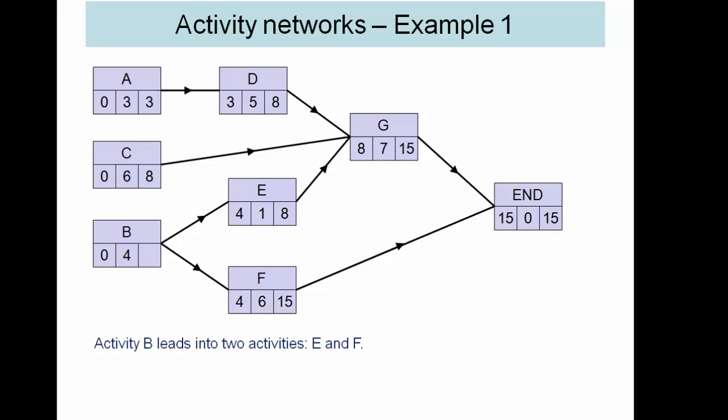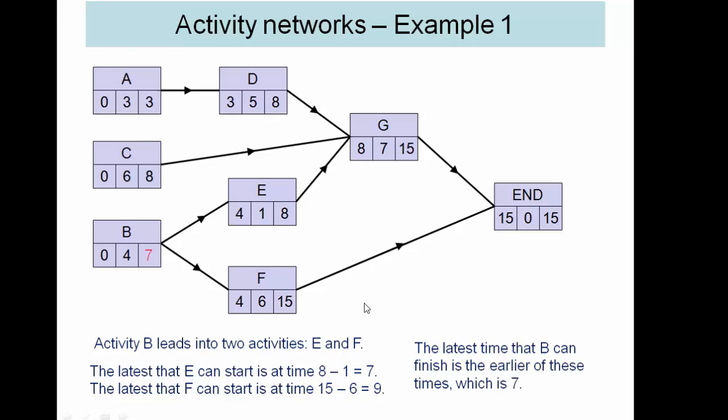Right, B is slightly different because it leads into both E and F. So eight minus one gives us seven for E, but then 15 minus six gives us nine for F. So we can see here on this occasion we have to take the earliest of the late times since we want to avoid delaying the project. And if we waited till nine we would delay the start of E by two.